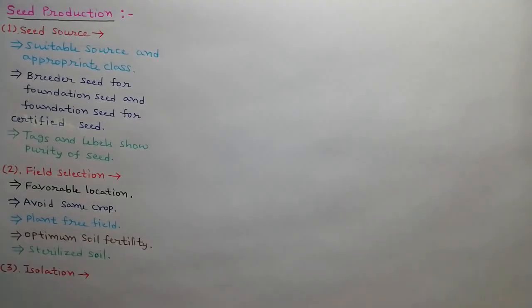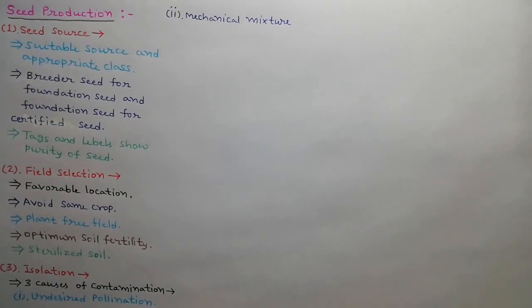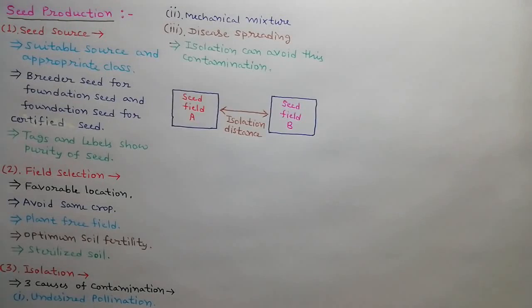Third step is isolation. There are three main causes of contamination: undesired pollination from nearby fields, other seeds mixed during harvesting and threshing, and disease spread from nearby fields. Isolation distance should be maintained between seed fields to avoid this contamination.